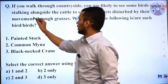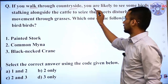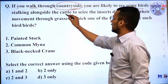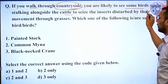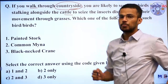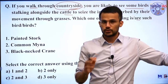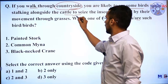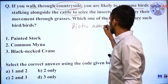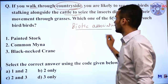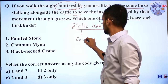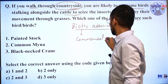The next question: if you walk through the countryside, you are likely to see some birds stalking alongside cattle to seize insects disturbed by their movement through grasses. This is a biotic interaction — specifically commensalism. In commensalism, one species gets benefit and the other remains unaffected. This is exactly the case here.